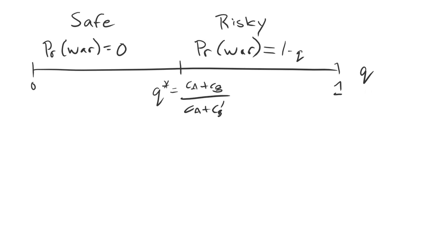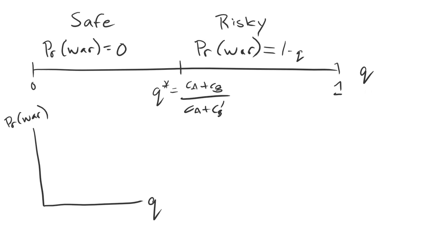Now we need to take this equilibrium information and define a true comparative static, then use it to understand how changing uncertainty changes the probability of war. We're going to be looking at a couple of different cases. The argument will still result in us concluding that we can't see a clear relationship between uncertainty and war, but whether Q falls above or below one-half will determine exactly how this unfolds. We'll do two different graphs, with Q on the x-axis and the probability of war on the y-axis.